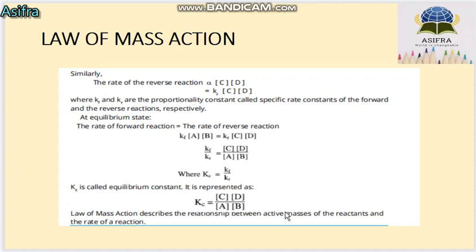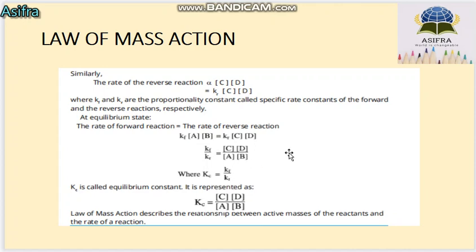Similarly, for the reverse reaction, the reactants are C and D, with Kr as the proportionality constant. At equilibrium, the rate of forward reaction equals the rate of reverse reaction. So Kf [A][B] equals Kr [C][D]. Dividing both sides, Kf over Kr gives us [C][D] over [A][B], which equals Kc. This ratio is known as the equilibrium constant Kc.